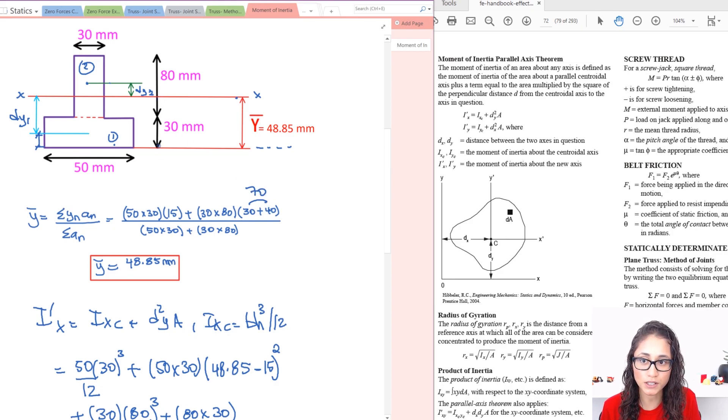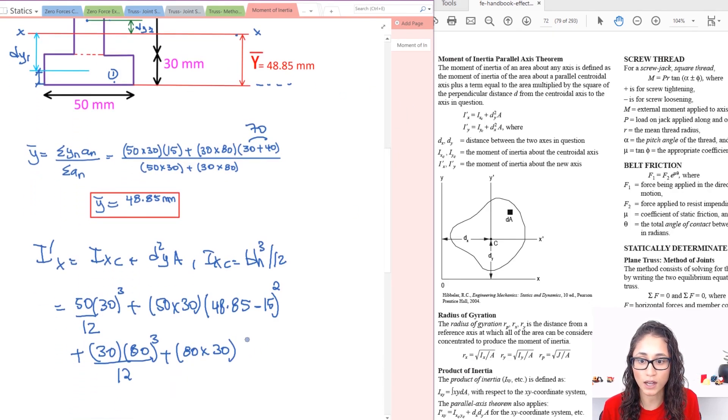So because we did 30 and then we added half of this length, which is 40, so that gives you 70. So what we can do is do 70, which is this whole distance from here all the way here, and subtract the centroid, that gives you your dy2. Really easy. So let's write that down. So I have 70 minus my centroid, which is 48.85 squared. So that's pretty much your moment of inertia.